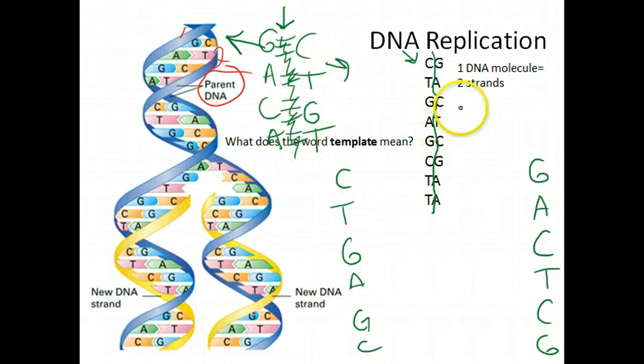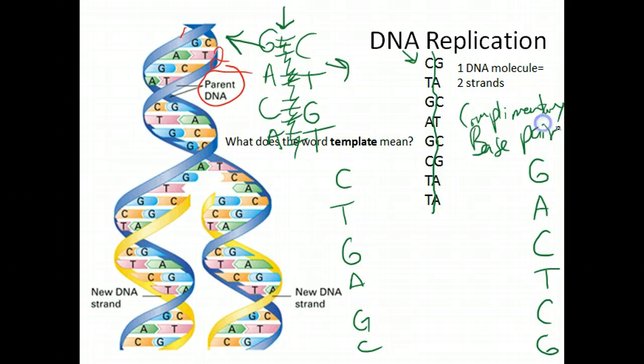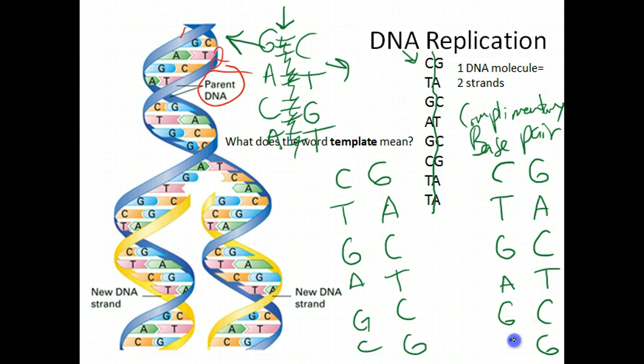Well, you have to complementary base pair. We all know how to complementary base pair. Basically, C's go with G's, T's go with A's. So you fill that back in. Same thing over here for the other strand, except it's opposite. If you want to get really technical, you can actually fill in the hydrogen bonds, which I'm going to do here.